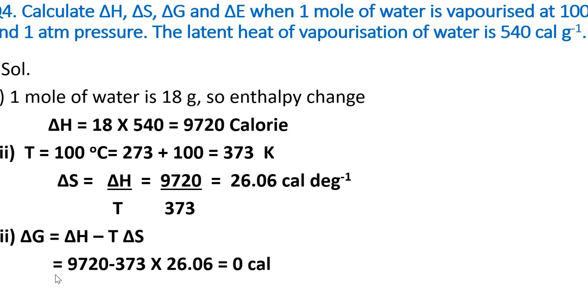ΔG = ΔH - TΔS = 9720 - 373 × 26.06 = 0 calories. For calculation of ΔE we need ΔH and the work done, or PΔV.